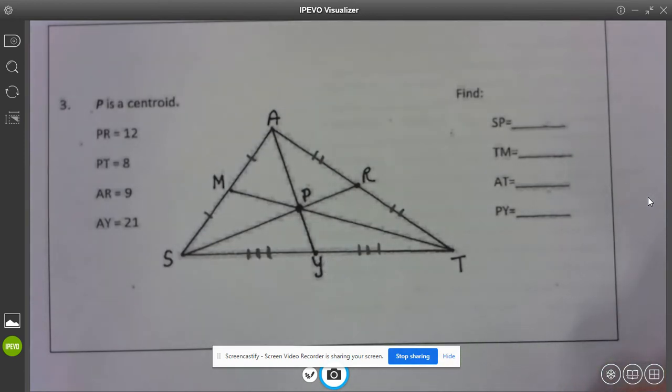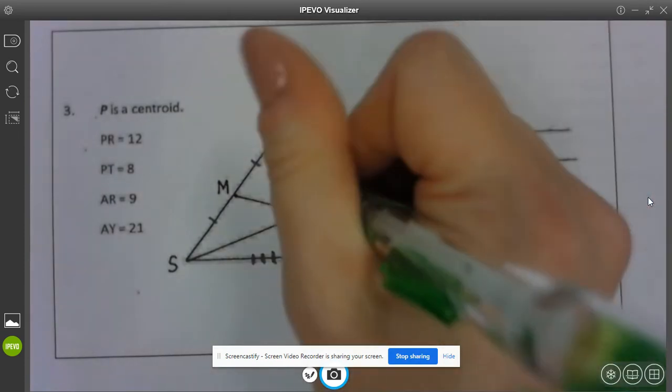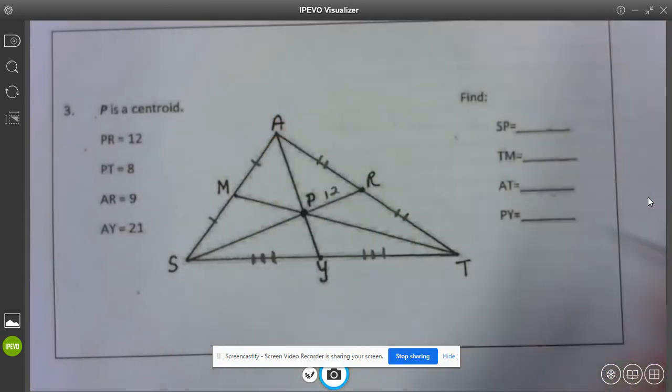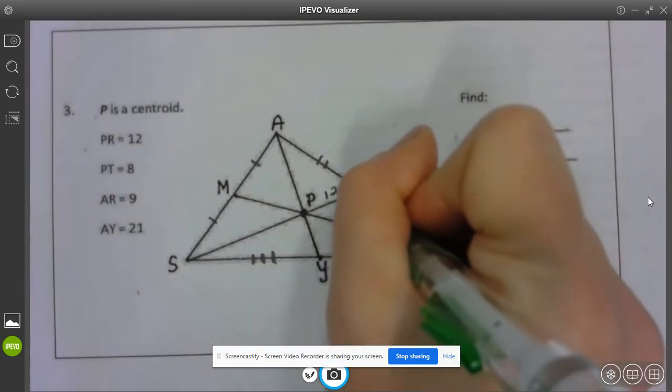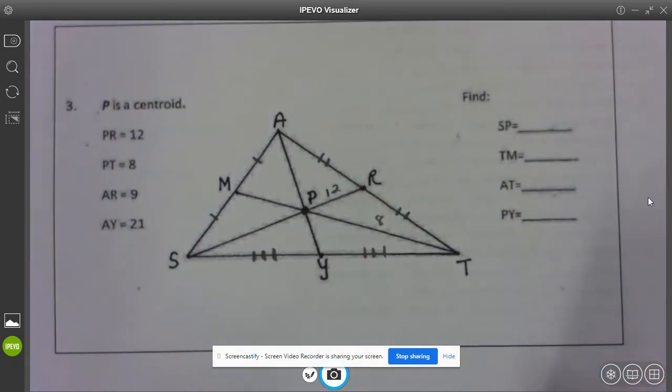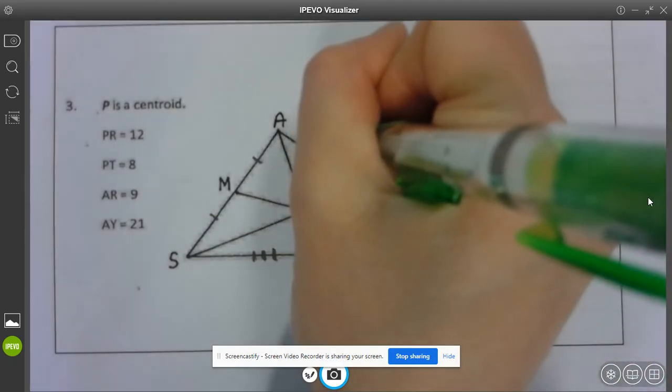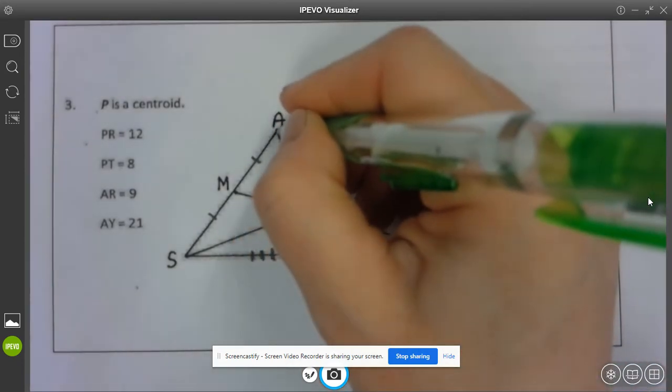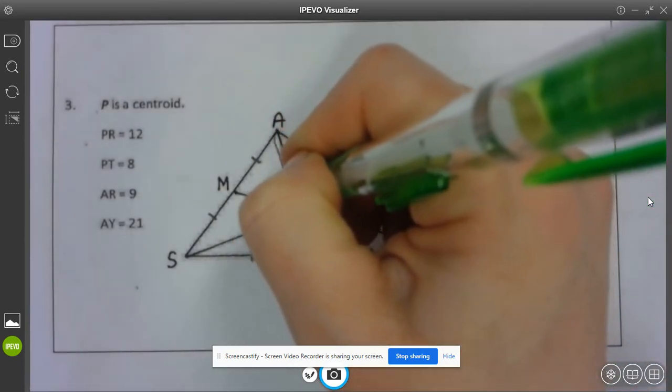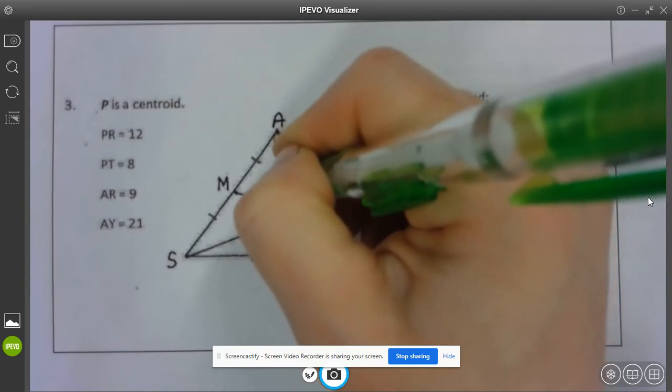So PR is 12, PT is 8, AR is 9 and AY this whole side here is 21.